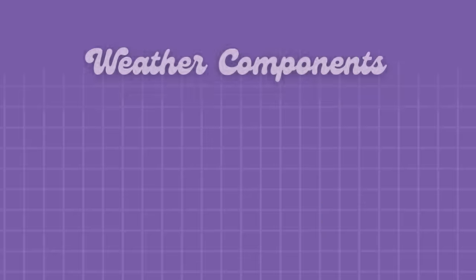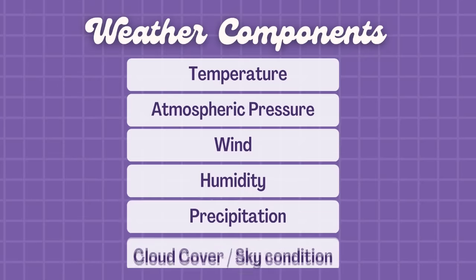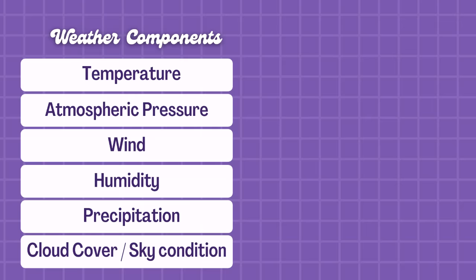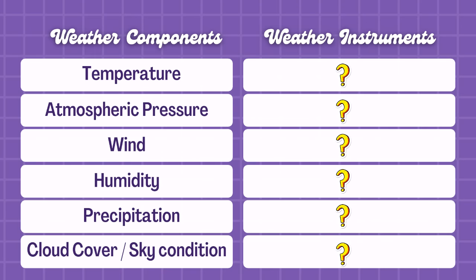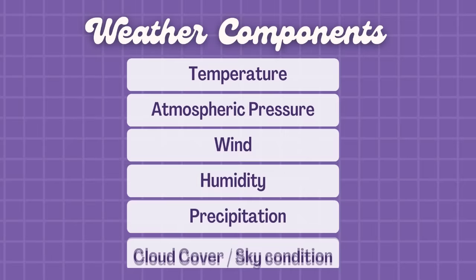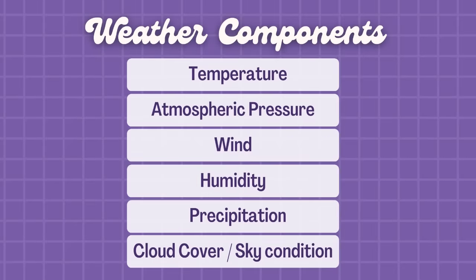There are six main components or elements of weather, and each component is measured using a corresponding weather instrument. But first, let us study the components or elements of weather.